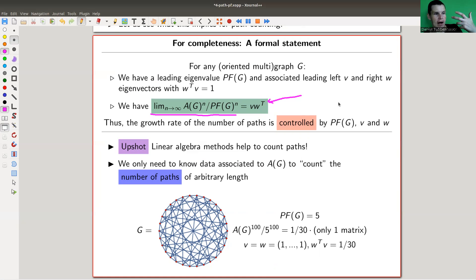So very, very simple. So for A(G), we just need to compute one eigenvalue and one eigenvector, and it controls the number of paths of arbitrary length, which is a ridiculously great statement.